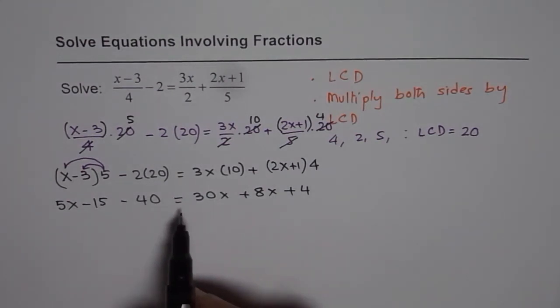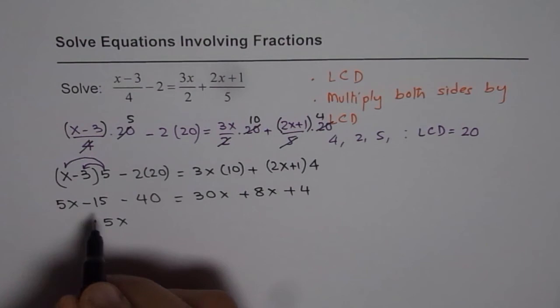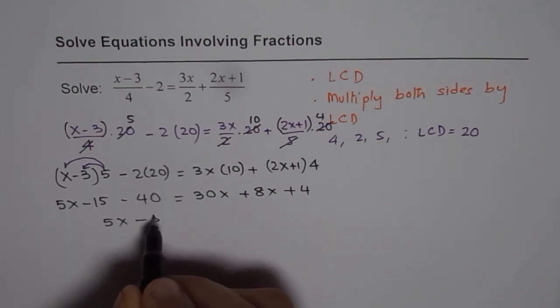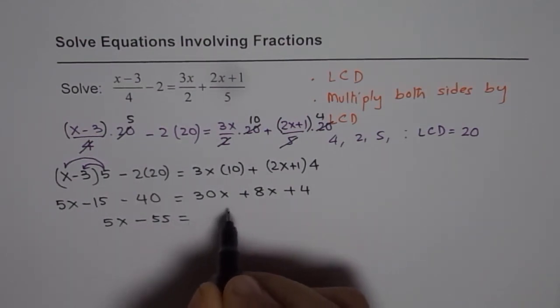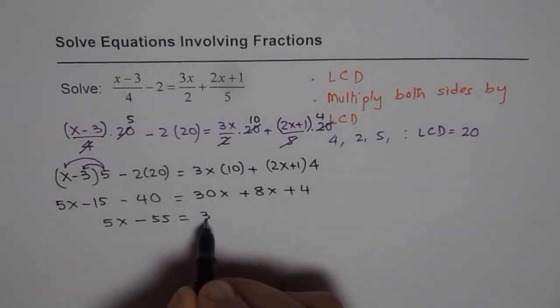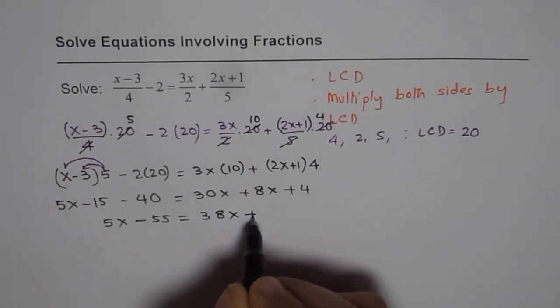At this stage we can combine the like terms. So we have 5x minus 15 minus 40 is minus 55, equals to 30 plus 8 is 38x plus 4.